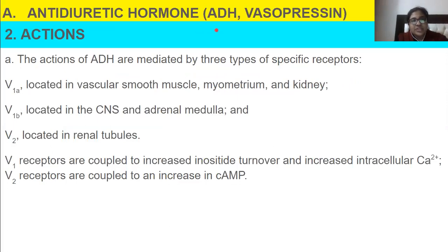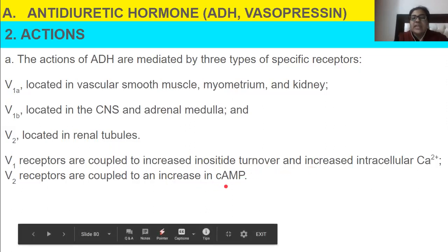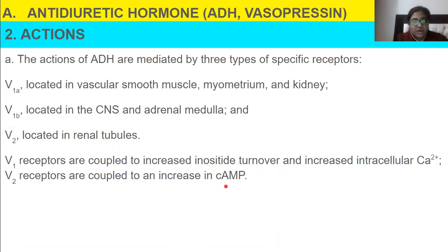The actions of ADH are mediated by three types of specific receptors: V1a, V1b, and V2. V1a and V1b are located at smooth muscle, myometrium, kidney, CNS, and adrenal medulla. V2 is located at the renal tubules. V1 receptors are coupled to increased inositol turnover and increased intracellular calcium, while V2 receptors are coupled to an increase in cAMP.